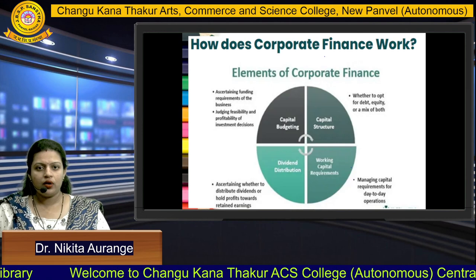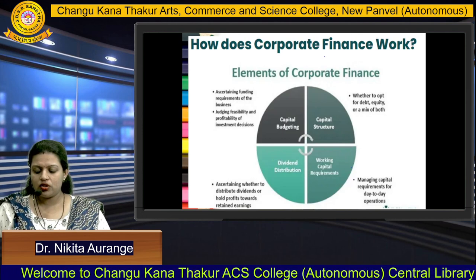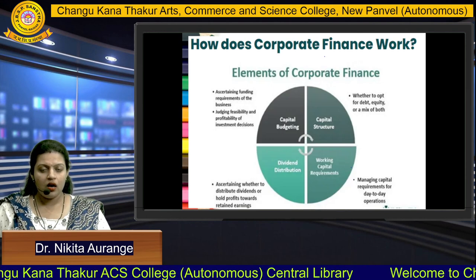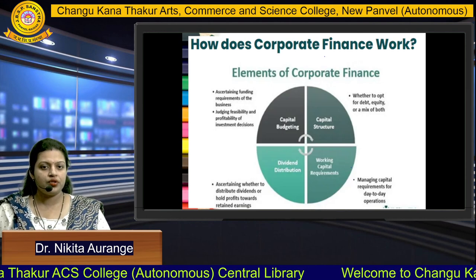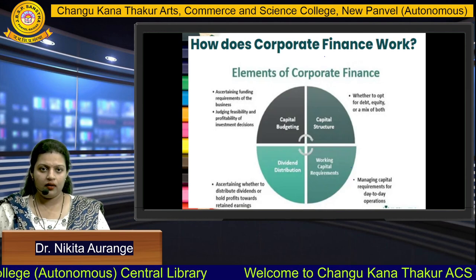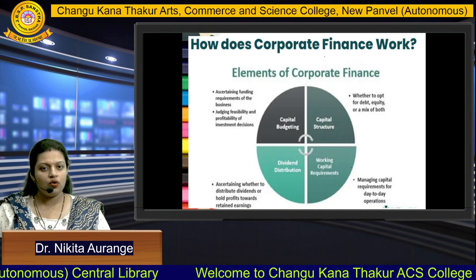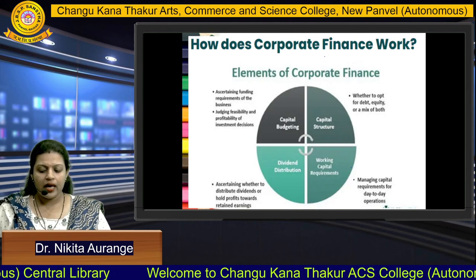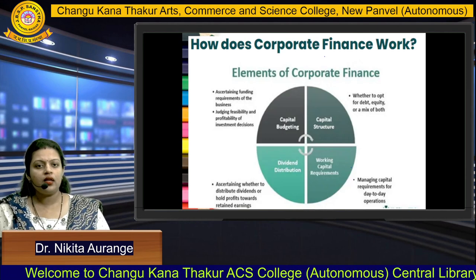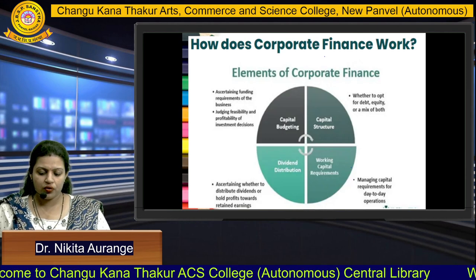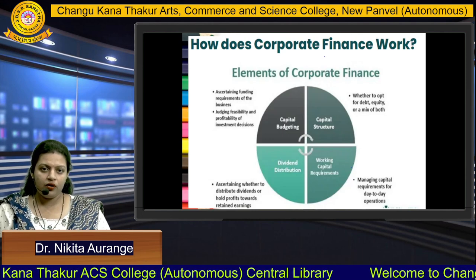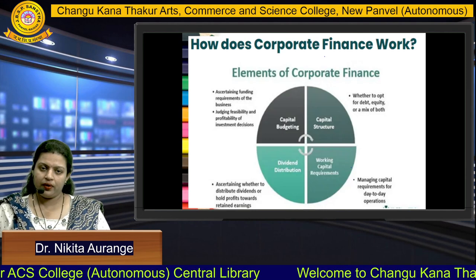Secondly is working capital requirement, meaning to look into the day-to-day operations. Third is dividend distribution policy, which determines how much profit you are going to distribute to shareholders, how much profit you are gaining, and how much retained earnings you are left with. Lastly is capital budgeting, which is basically to ascertain the requirement of funds into the future value and to adjust the profit according to the available funds. These are all the elements of corporate finance.